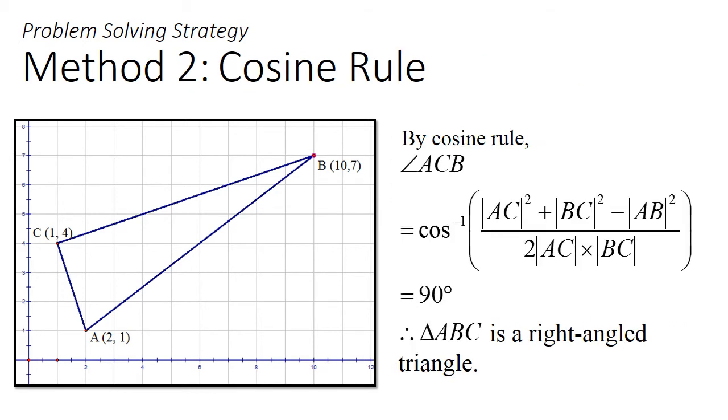If Pythagoras is too difficult to spell, one could also apply a corollary of the theorem known as the cosine rule. The cosine rule allows you to find the exact value of the angle ACB.